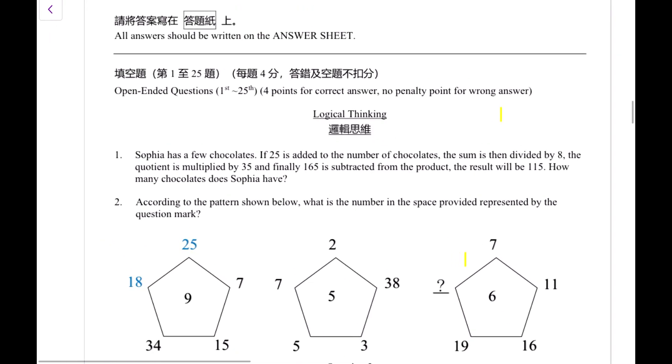Let me highlight as I read along. Sophia has a few chocolates. We do not have that number right now. If 25 is added to that number, the sum is then divided by 8. So there's a series of operations that we keep on doing to the number of chocolates she has. So first we add 25, then divide by 8, and then we multiply by 35. And finally, 165 is subtracted from that number. And the answer is 115. How many chocolates does Sophia have?